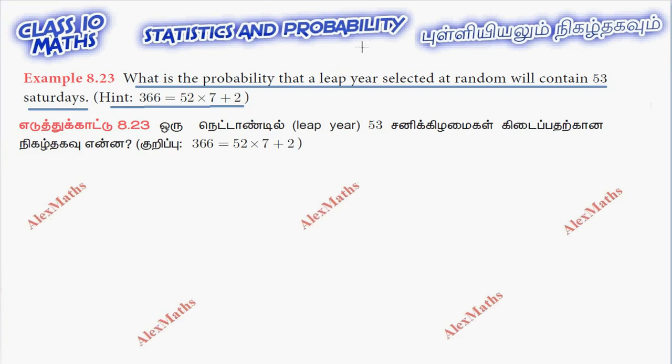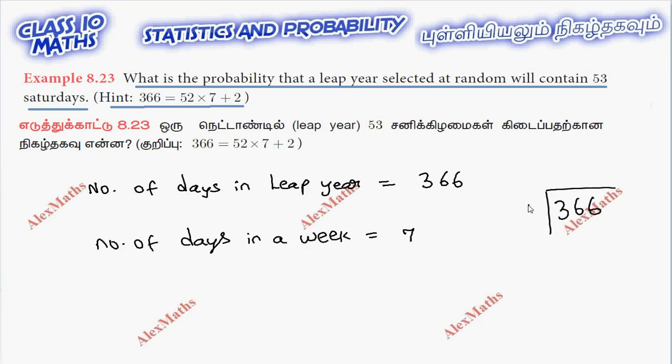We have 366 days in leap year. So number of days in leap year is 366. Now, number of days in a week is 7. Number of days in 52 weeks. So we have 52 complete weeks, that is 52 times 7 days. That is 52 complete weeks.